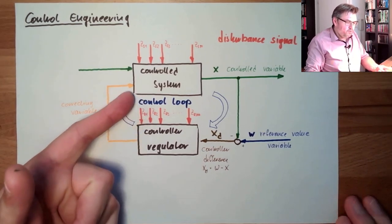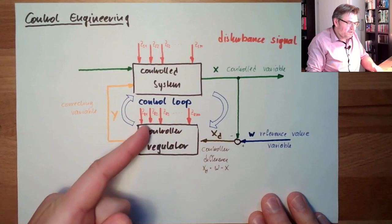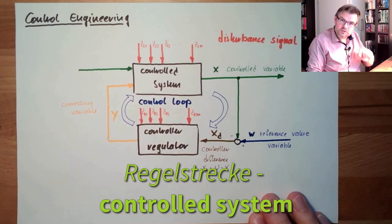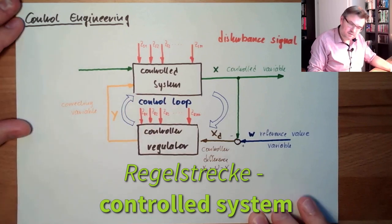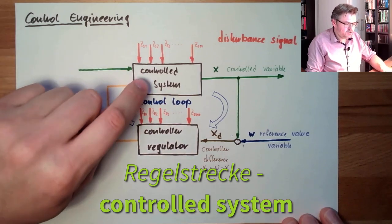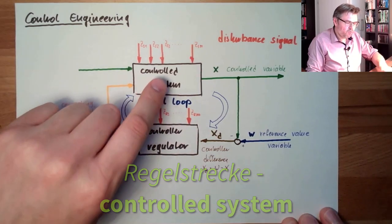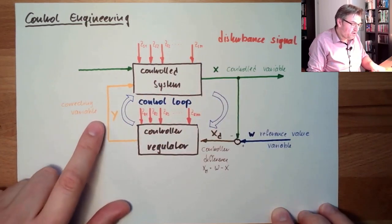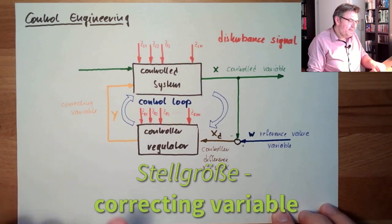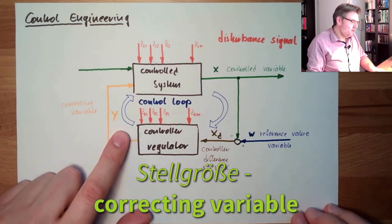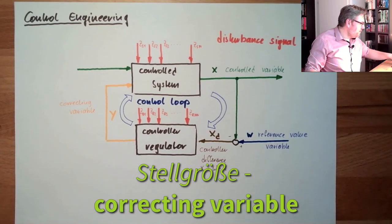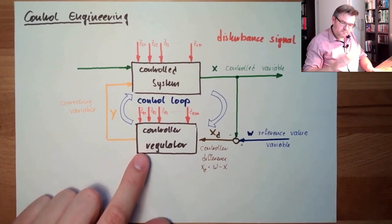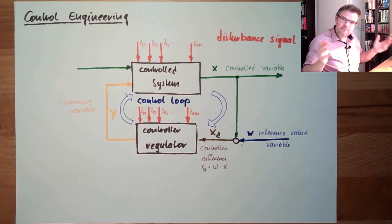The part where the controller can influence the controlled variable is called the controlled system. The controlled system is the part where the controlled variable can be influenced by the correcting variable. Depending a little bit on the definition, sometimes it's also defined to be inside the controller.